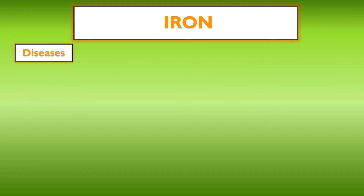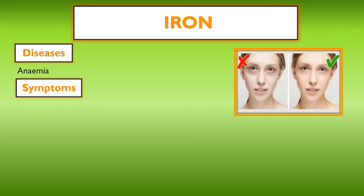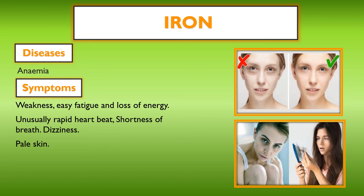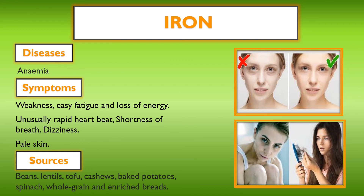Due to the deficiency of iron, the person can suffer from a disease called anemia. Symptoms include weakness, easy fatigue, loss of energy, rapid heartbeat, shortness of breath, dizziness, and pale skin. Sources of iron include beans, lentils, tofu, cashews, baked potatoes, peanuts, whole grains, and enriched bread. A person suffering from anemia should include all these food items in their diet.